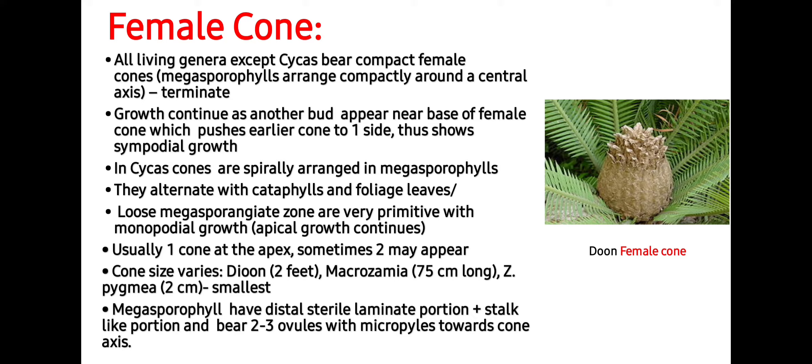In Cycas, cones are spirally arranged microsporophylls that alternate with cataphylls and foliage leaves. The loose megasporangiate zone is very primitive with monopodial growth, i.e., apical growth which continues, usually one cone at the apex, sometimes two may appear. Cone size varies: in Dioon it is two feet; in Macrozamia they are 75 cm long; and in Pygmaea they are 2 cm, i.e., the smallest.